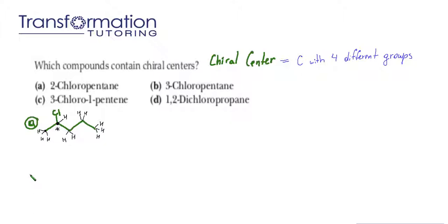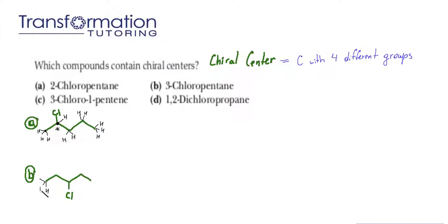Let's go ahead and go to molecule B — 3-chloropentane. We draw a pentane molecule again: one, two, three, four, five, and we put a chlorine on the third carbon. Again, we can add hydrogens just to see what carbon is attached to what — three hydrogens here, two here, one here, two here, and three here.